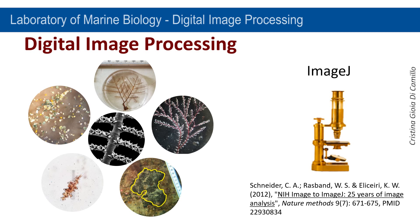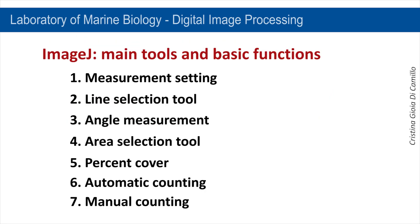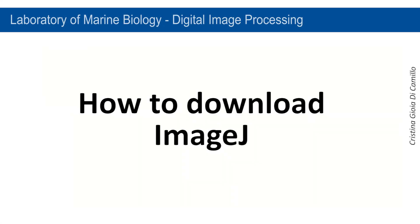Digital image processing allows manipulating images to obtain data useful in the field of life and environmental sciences. This video tutorial shows some basic functions of a free image editing software called ImageJ.